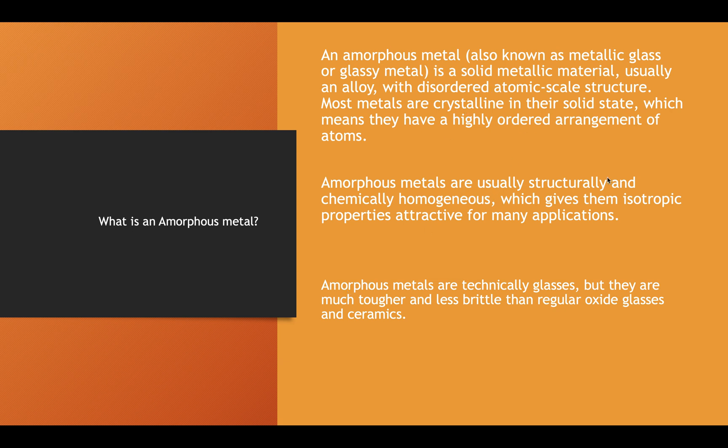I'll be providing pictures later on about this arrangement. Amorphous metals are usually structurally and chemically homogeneous, which gives them isotropic properties attractive for many applications. Amorphous metals are technically glasses, but they are much tougher and less brittle than regular oxide glasses and ceramics — the regular glasses we use every day, like the windows of our houses.